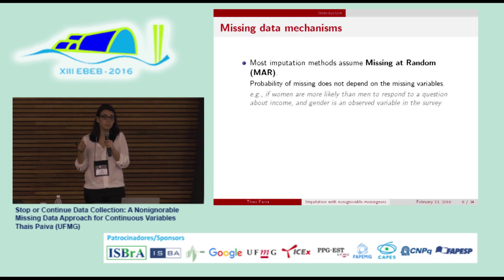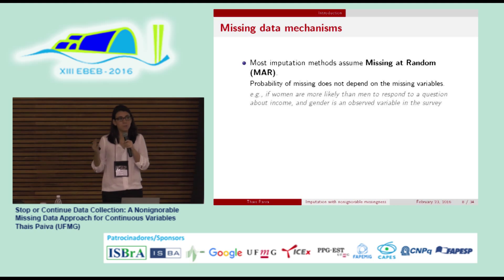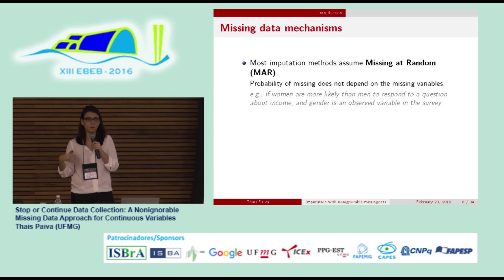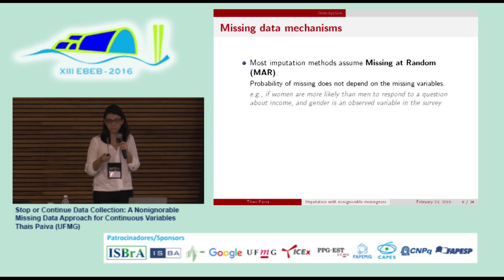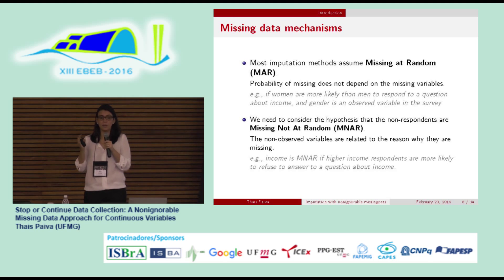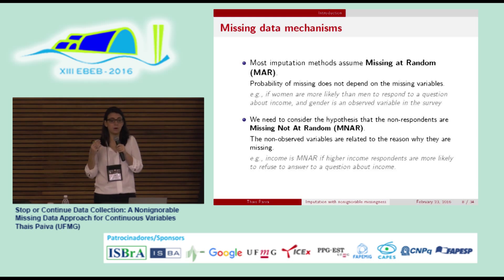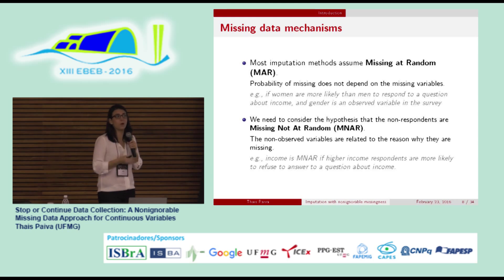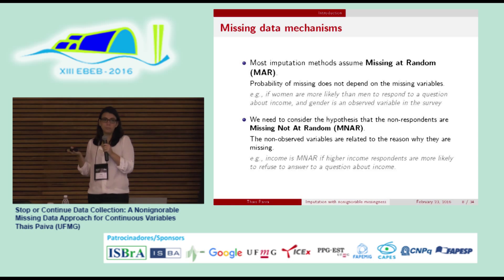Another limitation is that most imputation methods assume the data is missing at random, meaning the probability of missingness does not depend on the missing variables. For example, if women are more likely than men to respond to a question about income, and we have observed the gender of all individuals, then in that case income would be missing at random.